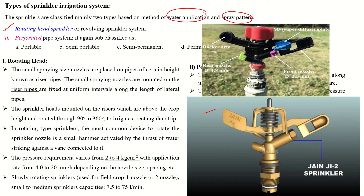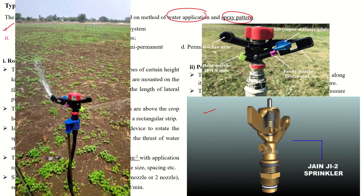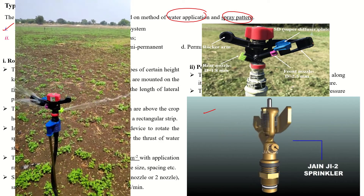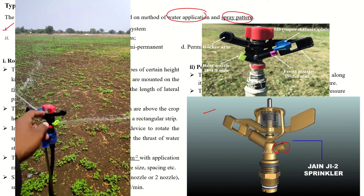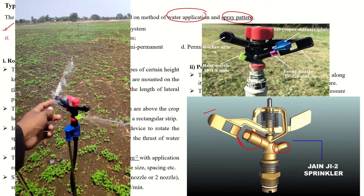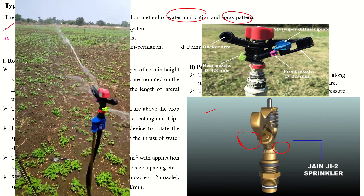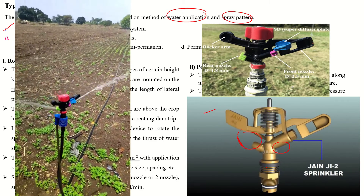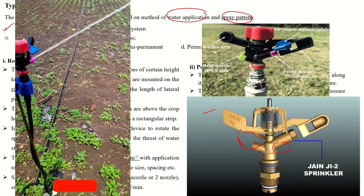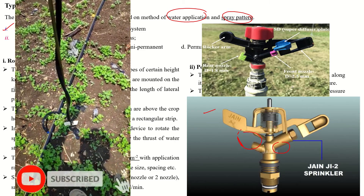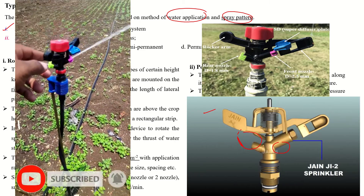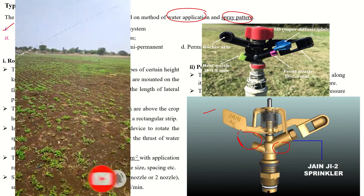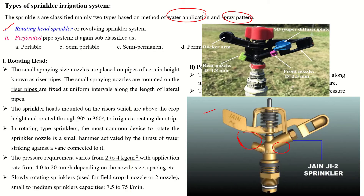In the rotating head sprinkler, as shown in this picture, the sprinkler will rotate. There are two nozzles — one is a small nozzle and another is a larger nozzle. Water comes out due to the thrust of water from the riser pipe, which creates pressure, causing the nozzle to rotate.